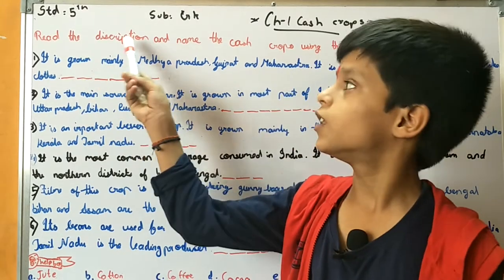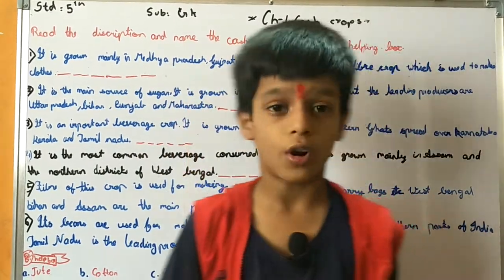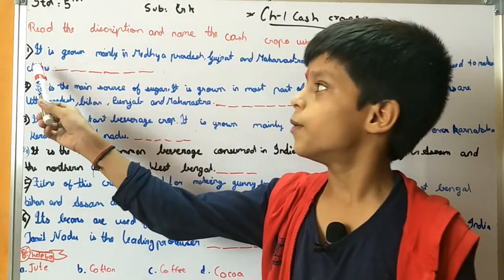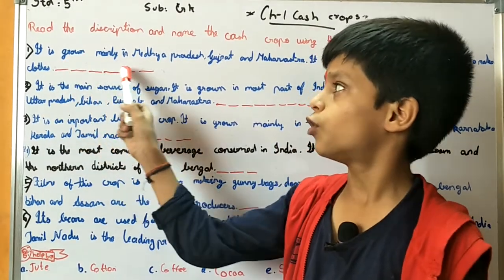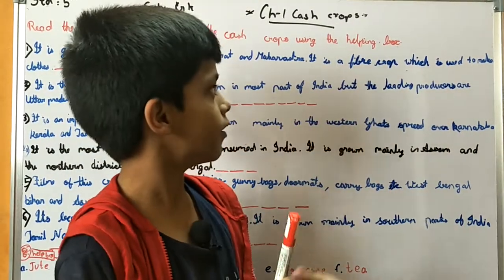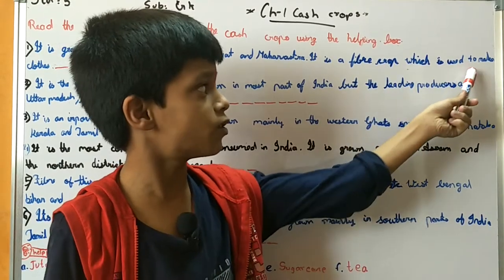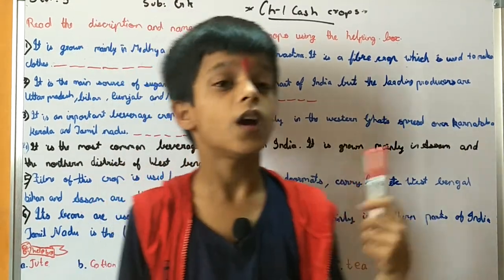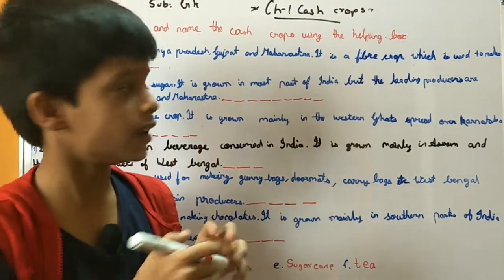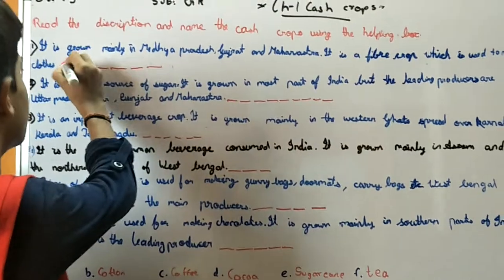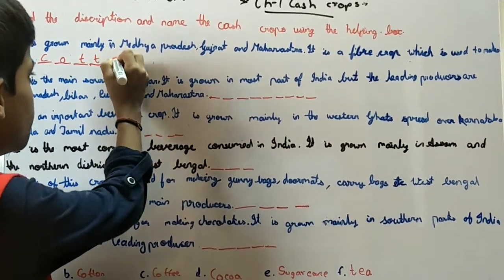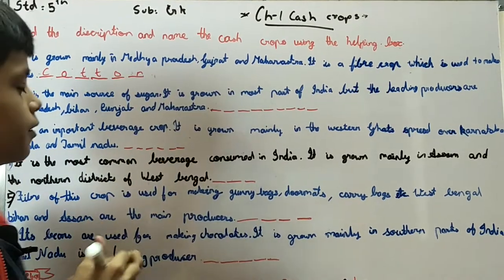Read the description and name the cash crop using the helping box. Number 1: It is grown mainly in Madhya Pradesh, Gujarat and Maharashtra. It is a fiber crop which is used to make clothes. So friends, the answer is Cotton.